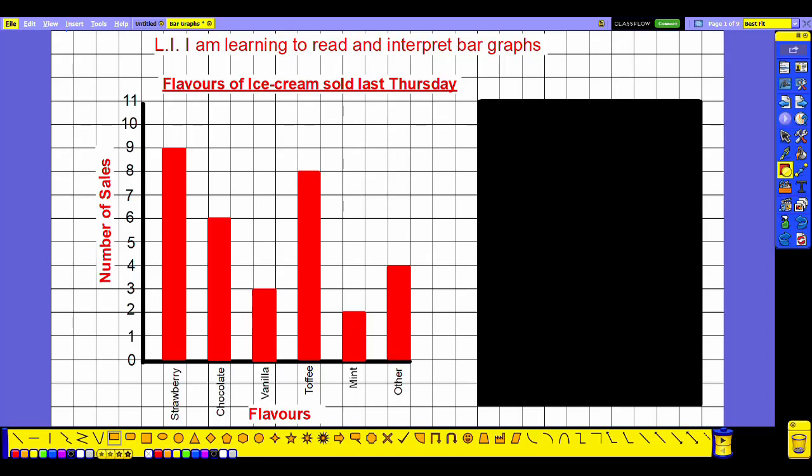Hi guys, in today's video we're going to be learning to read and interpret bar graphs. Bar graphs are handy ways of comparing different groups or categories of information in a visual way. The first thing that you should always look at with any bar graph is the title because that tells you what the bar graph is depicting.